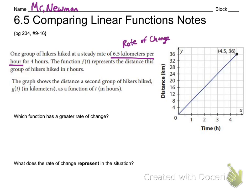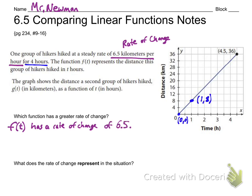When it says 6.5 kilometers per hour, I'm reading that as a rate of change because I see the word 'per' — kilometers per hour is a rate of change. It also says four hours, which will be important later. On the graph I only have one point labeled, but the line goes exactly through the corners, so I'm going to pick the two simplest points to calculate the rate of change: zero comma zero and one comma eight. I'll put both into a table and find the rate of change.